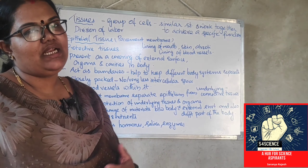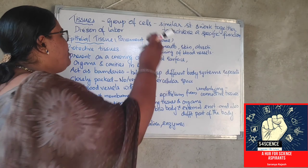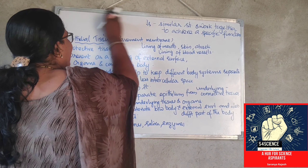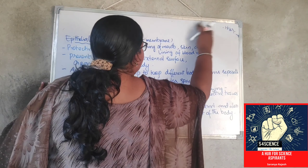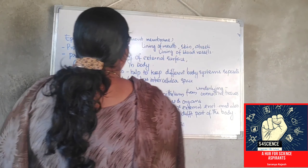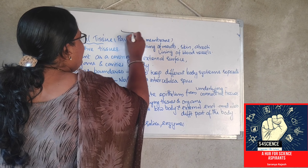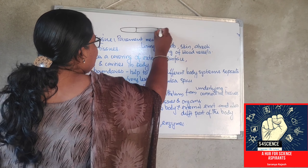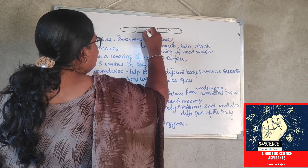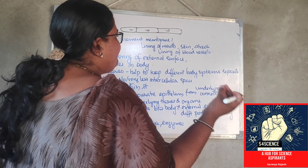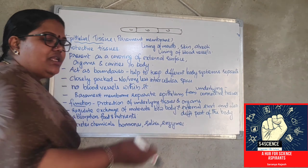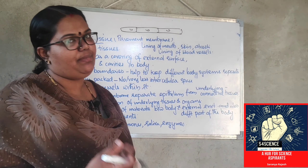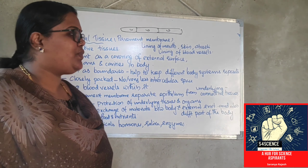So what is epithelial tissue? If you look at the structure, you can see that the cells are really flat — a thin, single layer of flat tissue. There is very little or even no intercellular space. Such type of tissue is the epithelial tissue.